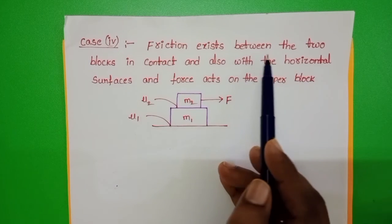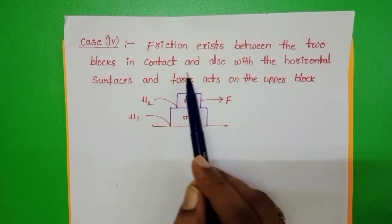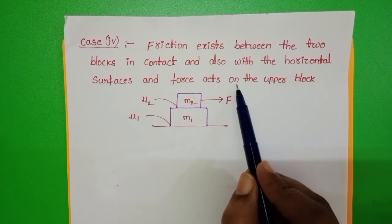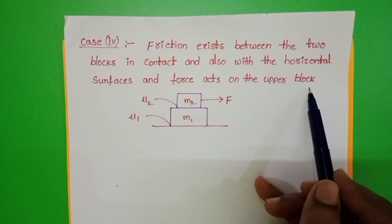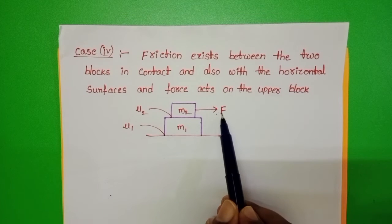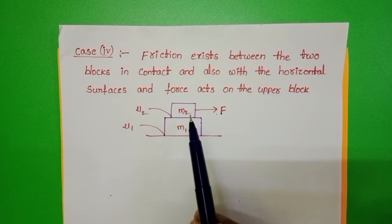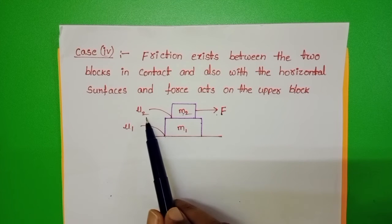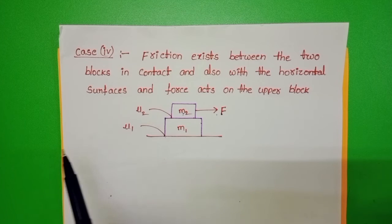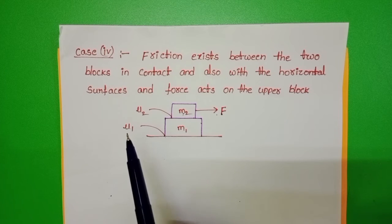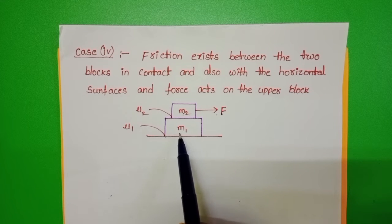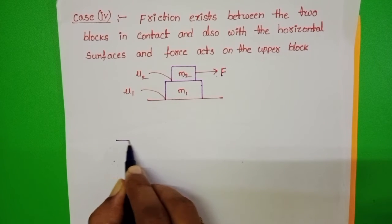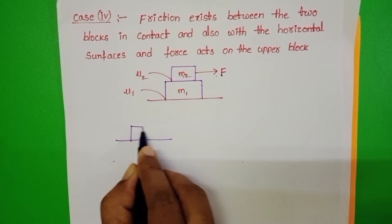Friction exists between the two blocks in contact and also with the horizontal surfaces, and force acts on the upper block. When force is applied on the upper block, frictional force exerts on m2 in the opposite direction. Due to that frictional force, it exerts a pseudo force on m1. To understand that, let us draw the free body diagrams of m1 and m2.